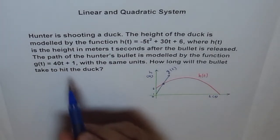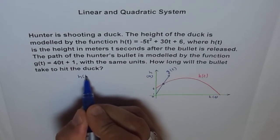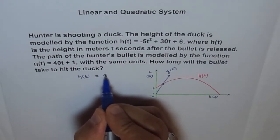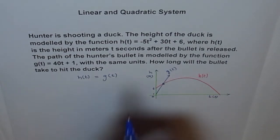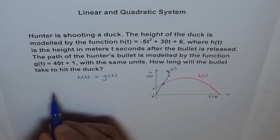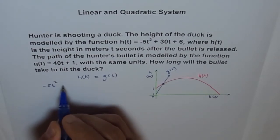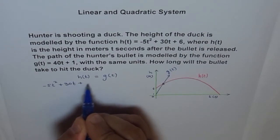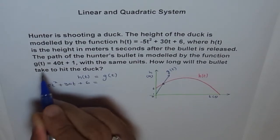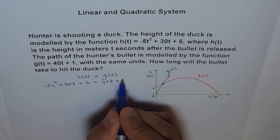Now, to determine this point, we can equate h(t) equals to g(t). So basically we want to say that h(t) equals to g(t) when the bullet hits the duck. Now, what is h(t)? h(t) is -5t² + 30t + 6 is equal to g(t) is 40t + 1.